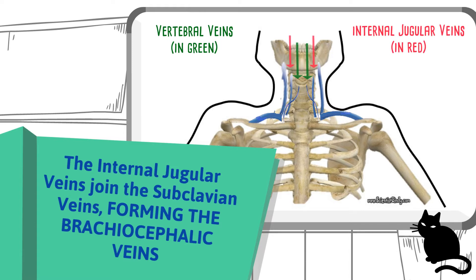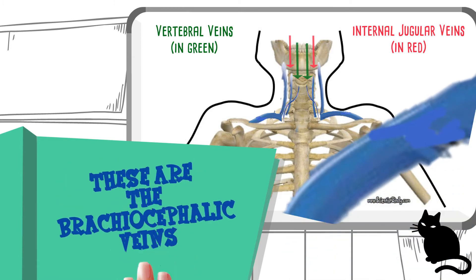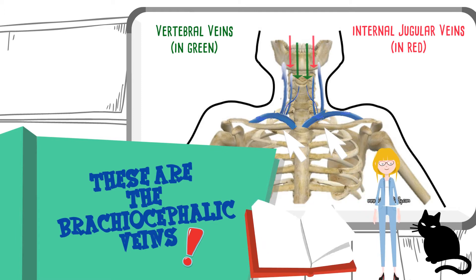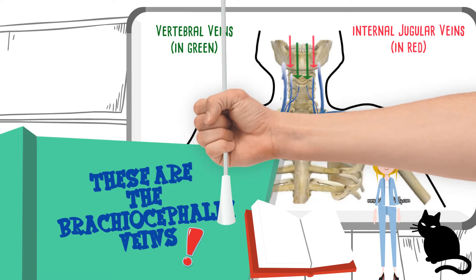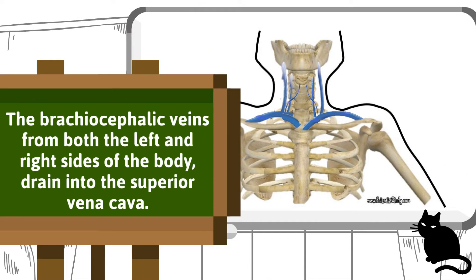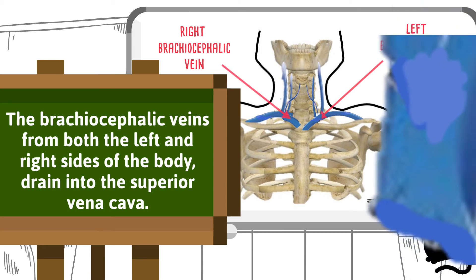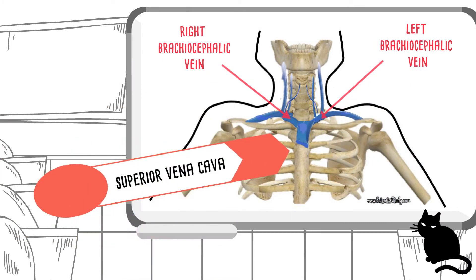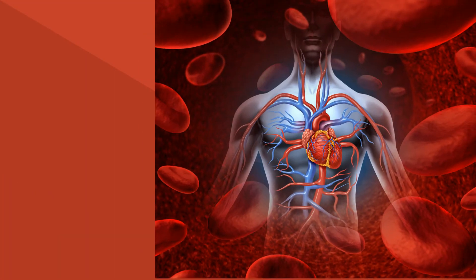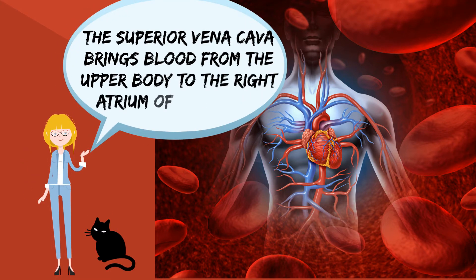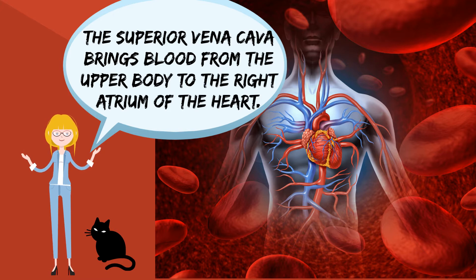The internal jugular veins join the subclavian veins to form the brachiocephalic veins. The brachiocephalic veins from both the left and right sides of the body drain into the superior vena cava. The superior vena cava brings blood from the upper body to the right atrium of the heart.